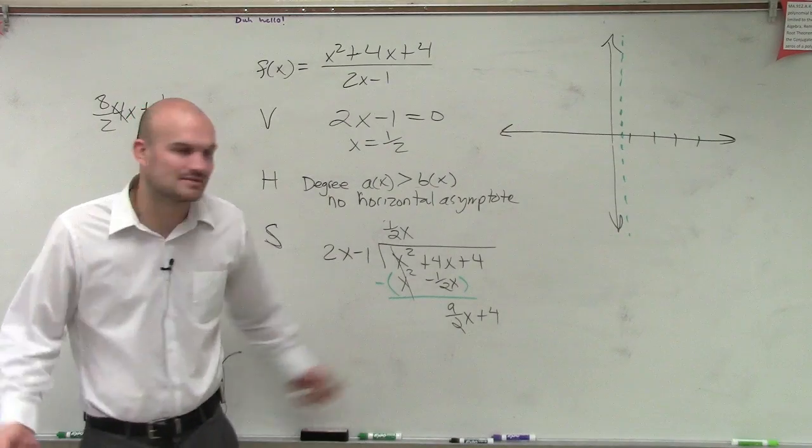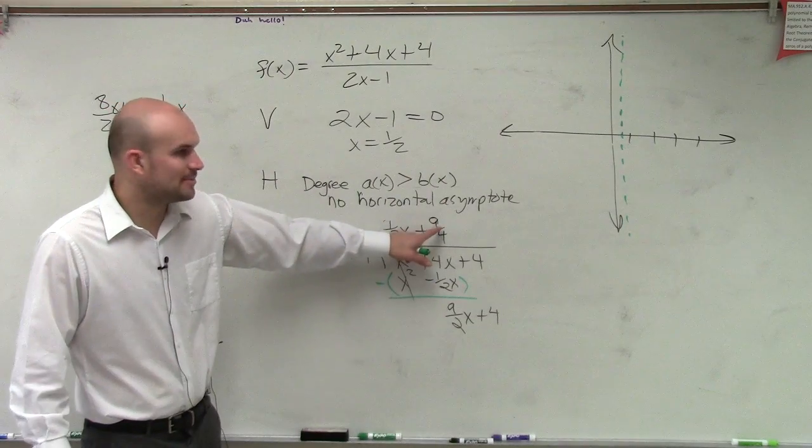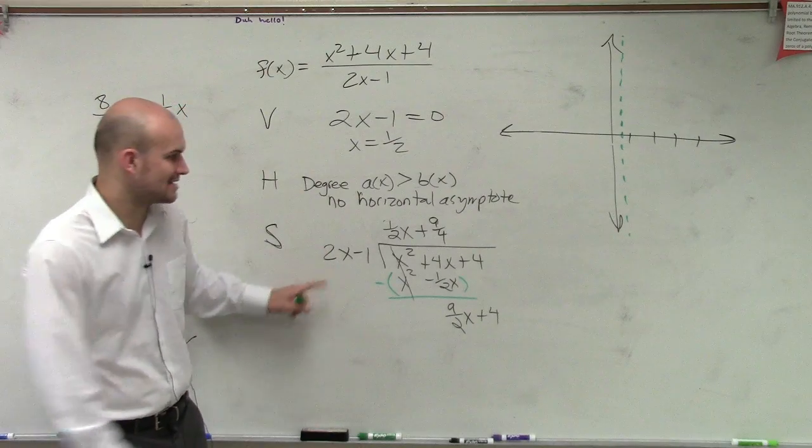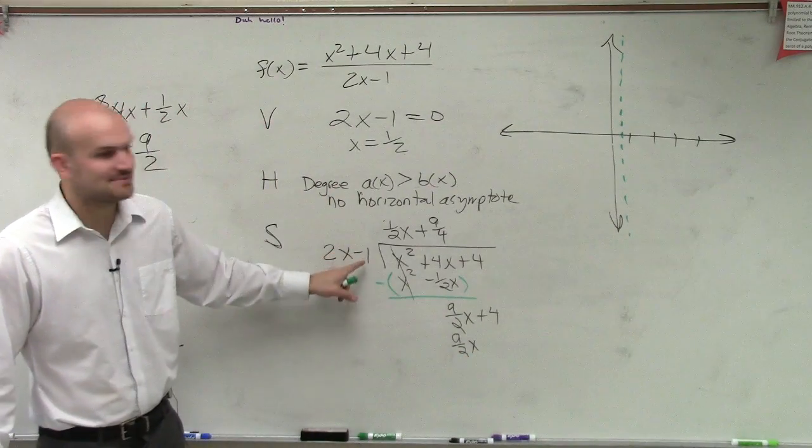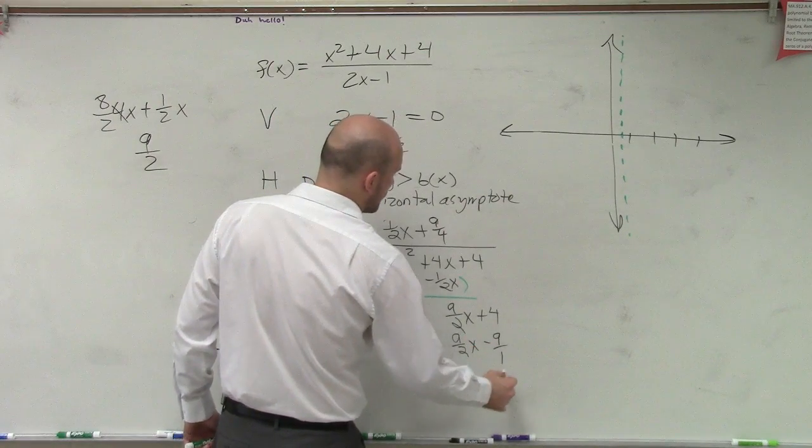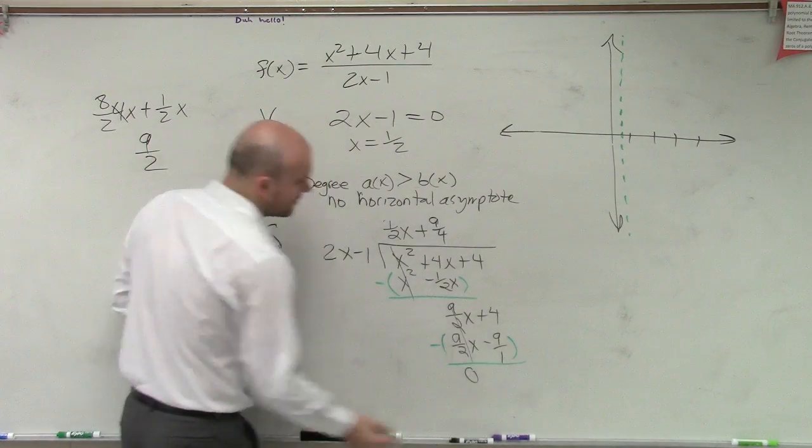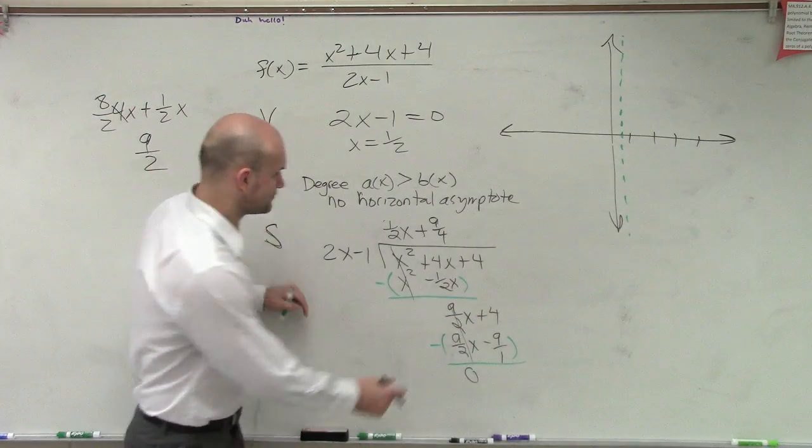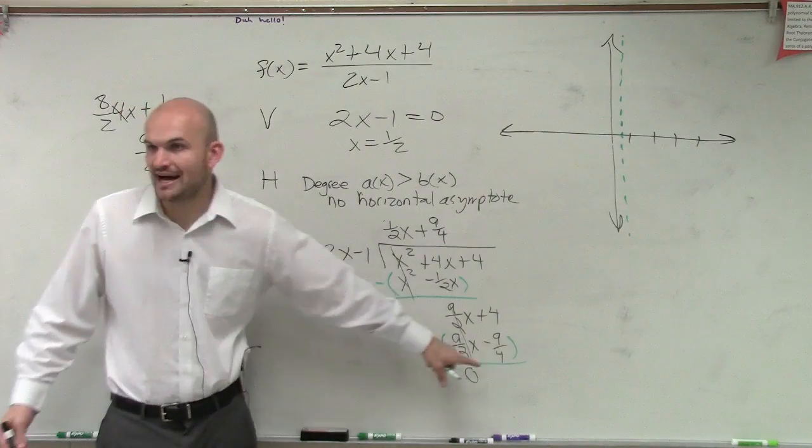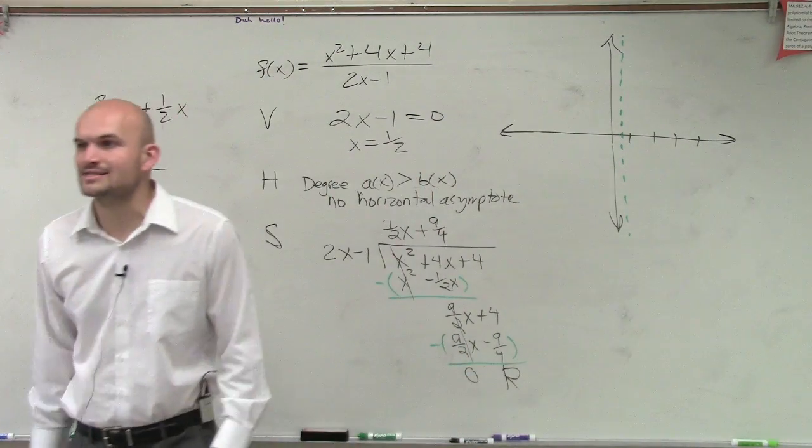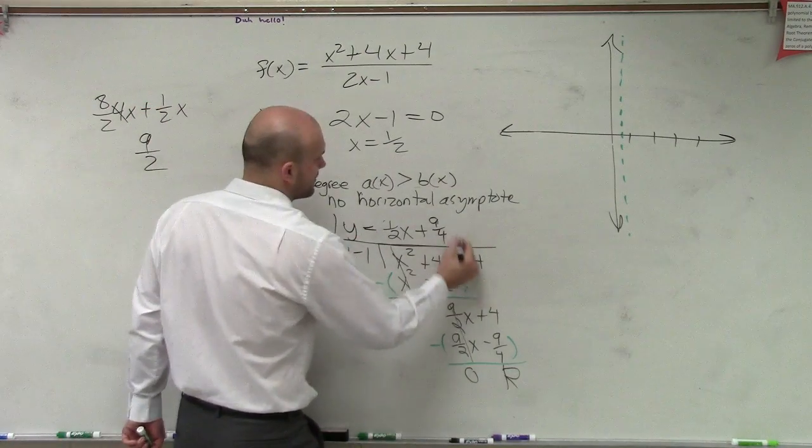So 2 divides into this how many times? 9 over 4. Let's check our math. How do we know if that's correct? Remember, you multiply 9 fourths times 2x. 9 fourths times 2x is 9 halves x. 9 fourths times negative 1 is a negative 9 over 4. Then you subtract the rows. This, again, goes to 0. And then, ladies and gentlemen, you could do 4 minus a negative 9 fourths. But, ladies and gentlemen, is an x going to divide into that number anyways? No. So guess what? That's your remainder. And I said slant asymptotes. Do you deal with the remainders? No. So therefore, our equation for our slant asymptote is y equals our quotient.